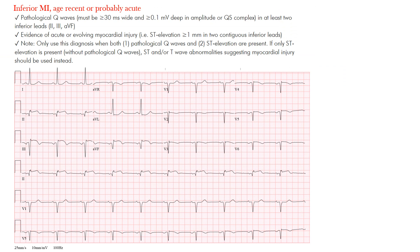So, acute inferior MI — let's get started. When we say inferior MI, age recent or probably acute, we think this inferior myocardial infarction is likely in the acute setting. What do we see on the EKG? There are a few things we're going to look for. We're going to look for pathological Q waves, and the other key finding is ST segment elevation. You want both of those, because if you just had the pathological Q waves, we would say that is likely an older, age-indeterminate inferior MI.